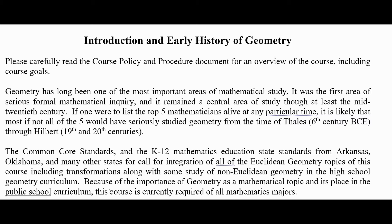If one were to list the top five mathematicians alive at any particular time, it's likely that most if not all of the five would have seriously studied geometry — from the time of Thales in the 6th century BCE through Hilbert in the 19th and 20th centuries.